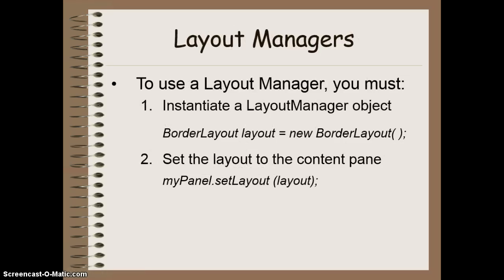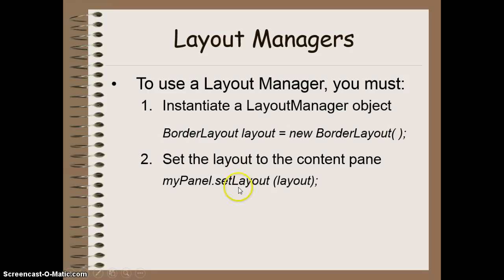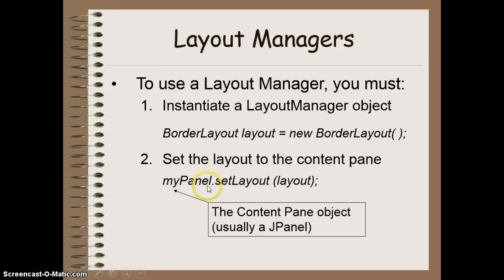When you want to use a Layout Manager, you have to do two things. First, you have to instantiate or create a Layout Manager object. Most Layout Manager classes use a similar constructor — you state the type of Layout Manager, give it a name, and construct it with no parameters. Then you set that layout to your content pane, and after that you can start adding components into that panel.